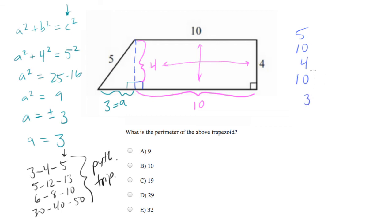So 5 + 4 + 3 is 12, plus 20 is 32, which is answer choice E.